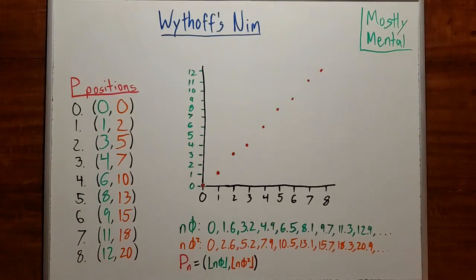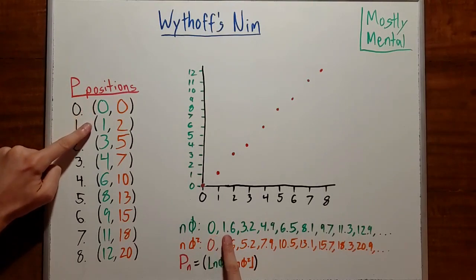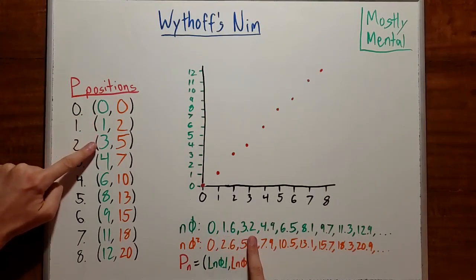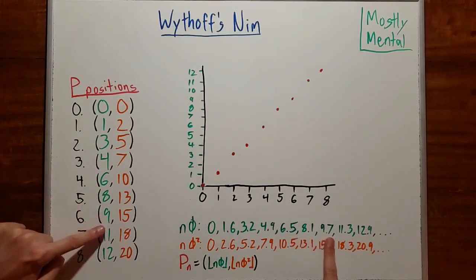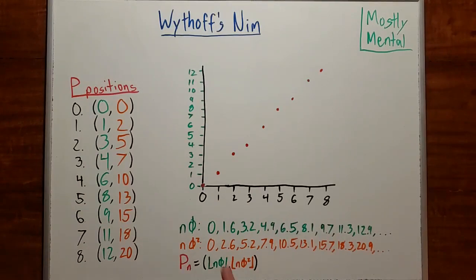And sure enough, if we list out the values of n phi, we get 0, something a bit more than 1, something a bit more than 3, a bit more than 4, 6, 8, 9, and so on. If we clean that up a bit by rounding these down to get rid of all the fractional bits, that is, if we take the floor function, then these two sequences will match up. So the x coordinate for the nth P position seems to be the floor of n phi.